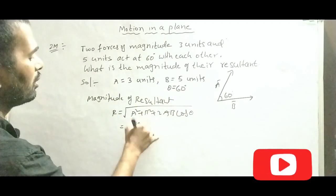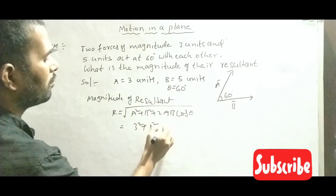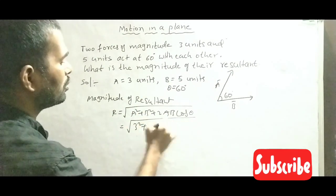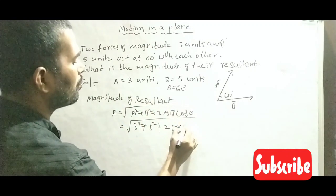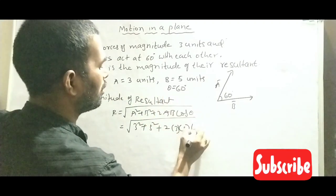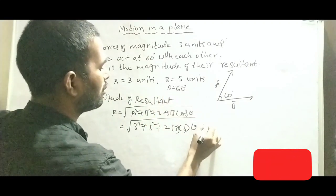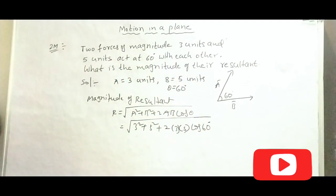A square, A is 3 square, B square, B value 5, 5 square plus 2, A means 3, B means 5, cos theta means 60, cos 60 degrees.